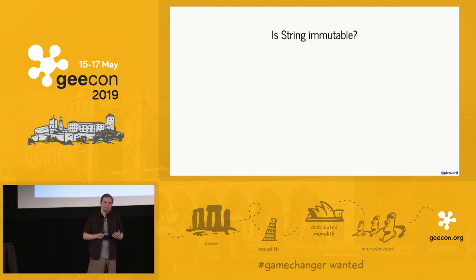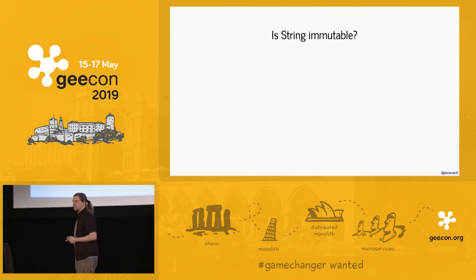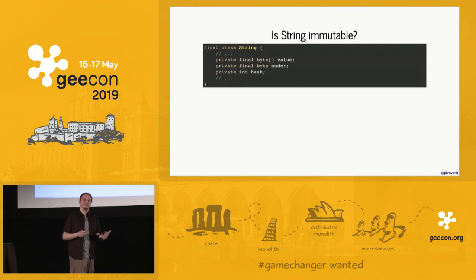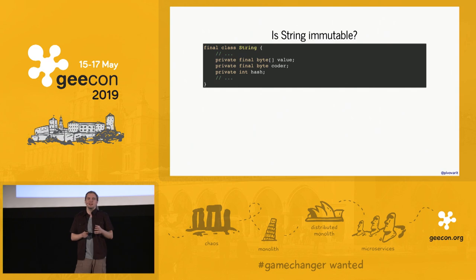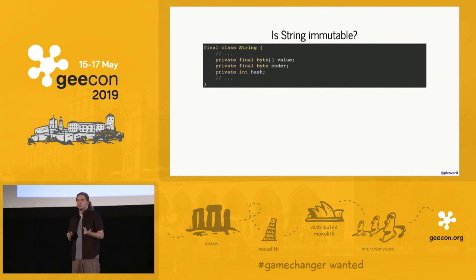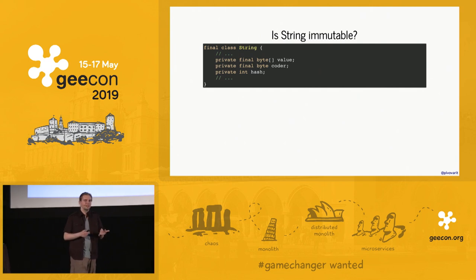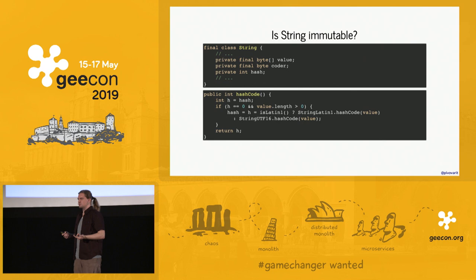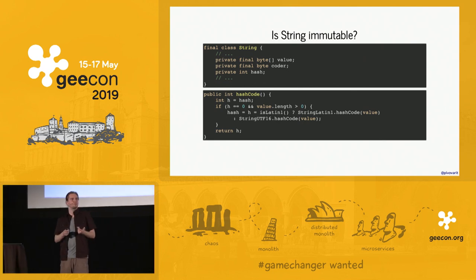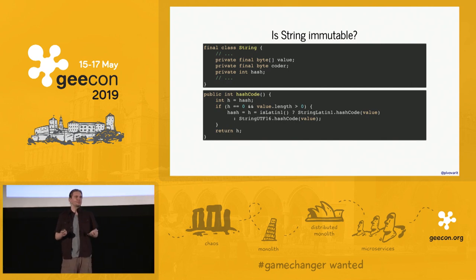So here's a question: is String an immutable class? Well, String has at least three fields — two of them are final, but there's one non-final field. So it doesn't really satisfy the definition Brian Goetz provided, and it can actually be modified after construction. But actually, all of us were right, because String is both immutable and mutable — it just depends on which abstraction layer you look at. From the consumer API perspective it is immutable, but nothing prevents it from being mutable internally for certain optimizations.